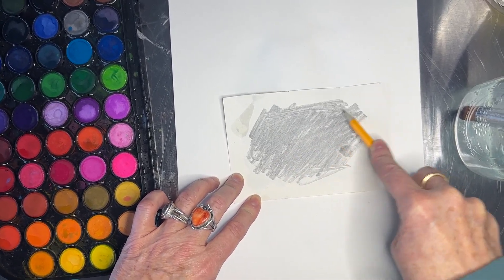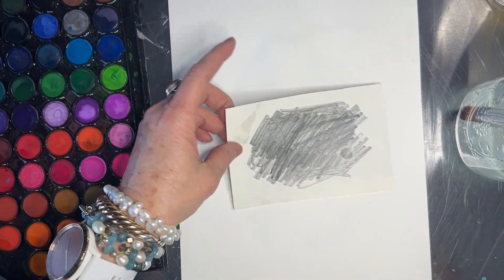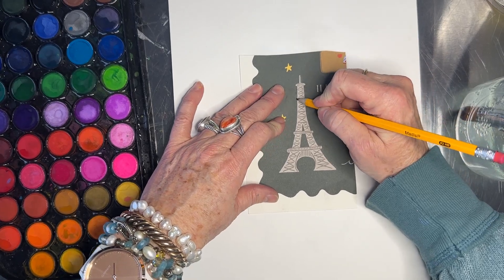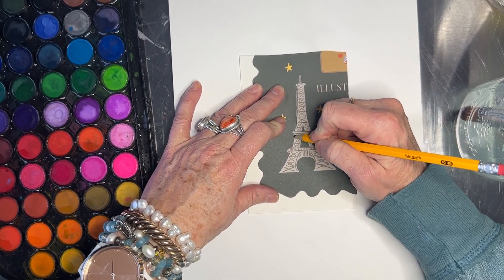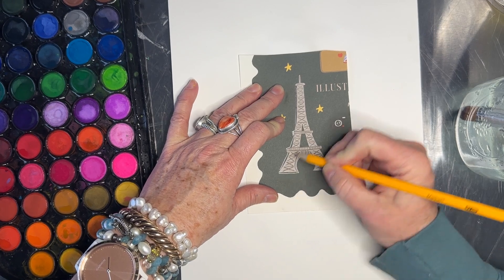So you're leaving lead or graphite on the back side and then we're going to use it to transfer. We're going to flip it over and then we're going to trace it. I'm just picking up all the major lines.